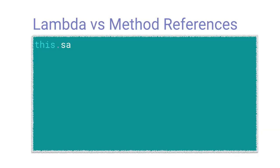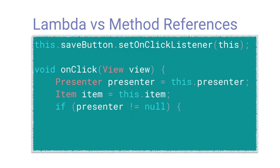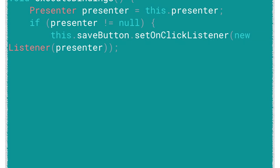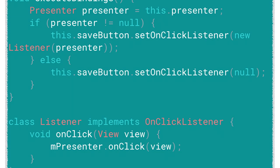With lambda expressions: when you inflate the layout, we set the click listener — it belongs to us. Then when the click happens, we evaluate the presenter, evaluate the parameters, and run it. With method references: when we execute bindings — the method we generate that updates the UI — we figure out the presenter. If there is a presenter, we wrap it in a listener class that calls the related method; if there isn't, we set the callback to null. The generated listener class looks like something simple that receives the presenter, keeps a reference to it, and calls it back.